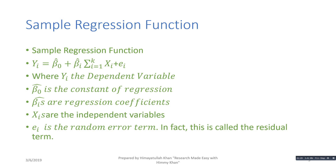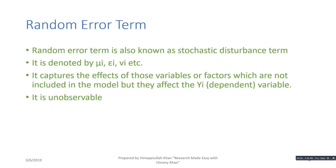In this equation, y_i is the dependent variable, β₀-hat is the constant or intercept of the regression, β_i-hat are the regression coefficients, and x_i's are the independent or explanatory variables. Here, instead of μ_i, we have e_i. In this sample regression function, e_i is the random error term, but in fact this is also called the residual term.